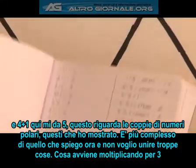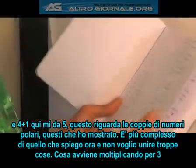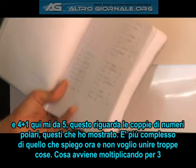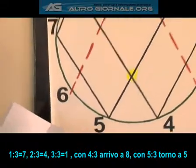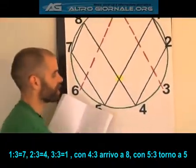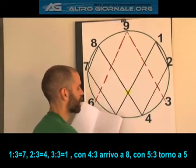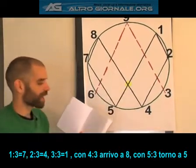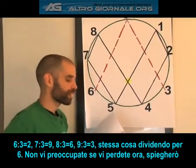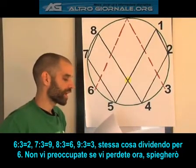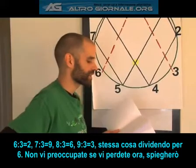I can find this pattern the same — this has to do with polar number pairs. What happens when I multiply by 3's? 1÷3 gives me 7. 2÷3 gives me 4. 3÷3 gives me 1. 4÷3 gives me 8. 5÷3 comes back to 5. 6÷3 equals 2. 7÷3 equals 9. 8÷3 equals 6. 9÷3 equals 3.